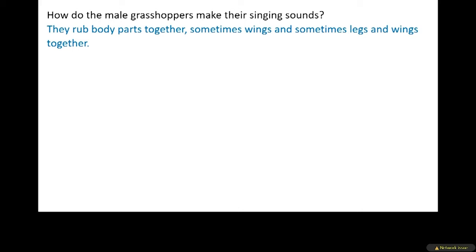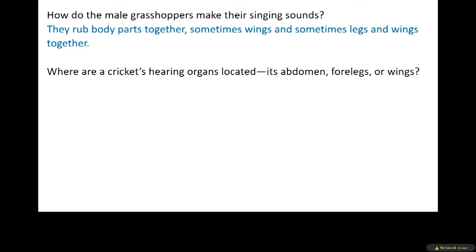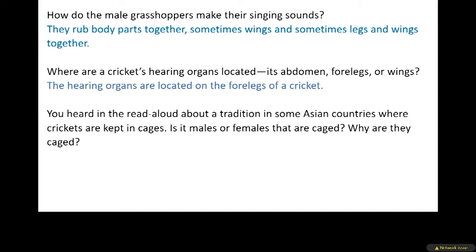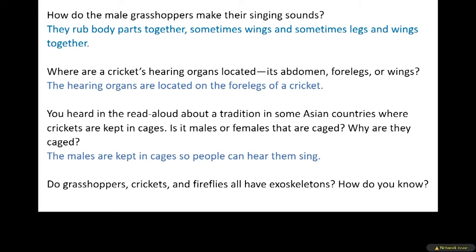Where are a cricket's hearing organs located — its abdomen, forelegs, or wings? The hearing organs are located on the forelegs of a cricket. In the read aloud, crickets are kept in cages in some Asian countries. Is it males or females that are caged, and why? The males are kept in cages so people can hear them sing. Do grasshoppers, crickets, and fireflies all have exoskeletons? How do you know? Yes — they are all insects and all insects have exoskeletons.